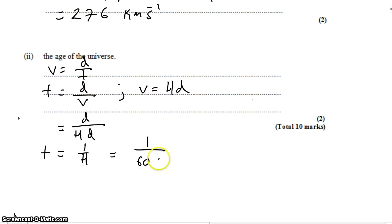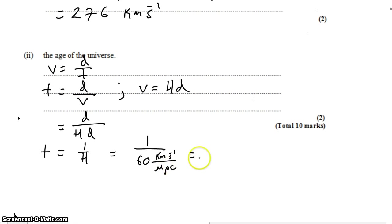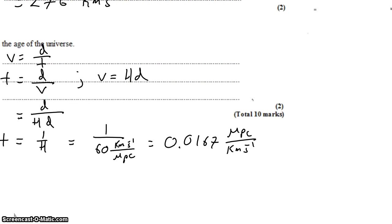So that's 1 divided by 60 kilometers per second per megaparsec. And that is the age of the universe, but just in ridiculous units. It works out to be 0.0167 megaparsecs per kilometer per second. Yeah, not great. So in order to get sensible units, we're going to have to convert megaparsecs to kilometers.